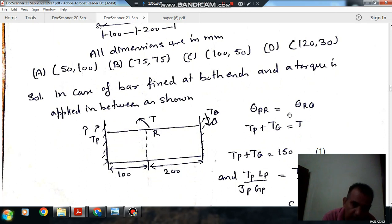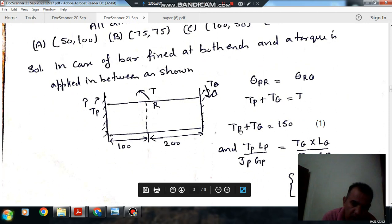So theta P equals theta Q. And the total torque is the sum of reactive torques: Tp plus Tq equals T. T is the applied torque, which is 150 Nm. So Tp plus Tq equals 150. This is equation number 1.